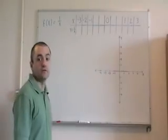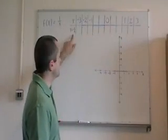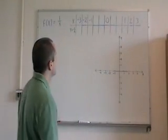Now I want to know what this function looks like. And the way I want to do that is by picking some values for x, putting it through the function 1 over x, and plotting the points in the graph. Okay, so let's begin.